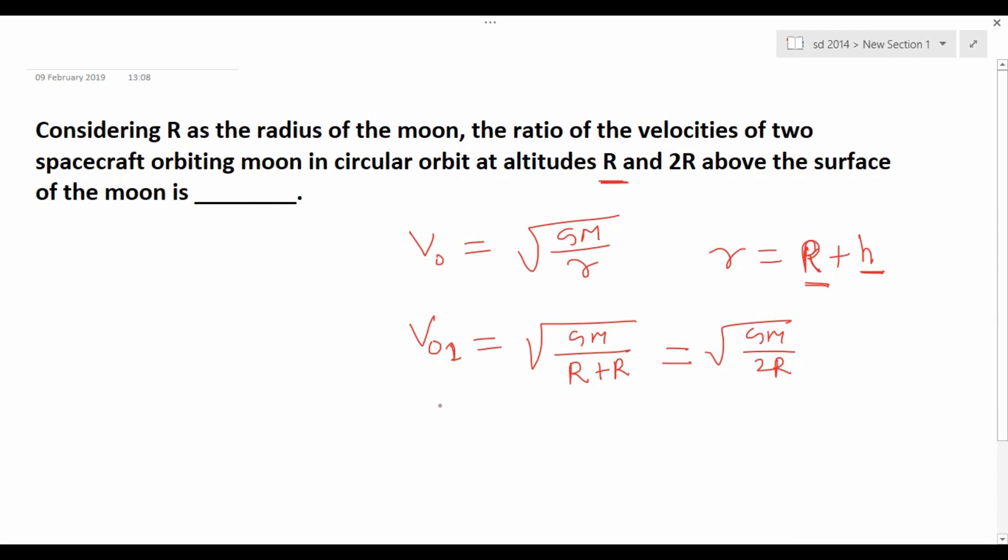And V_o2 is equal to the square root of GM by R plus 2R. Given 2R, this is equal to the square root of GM by 3R.